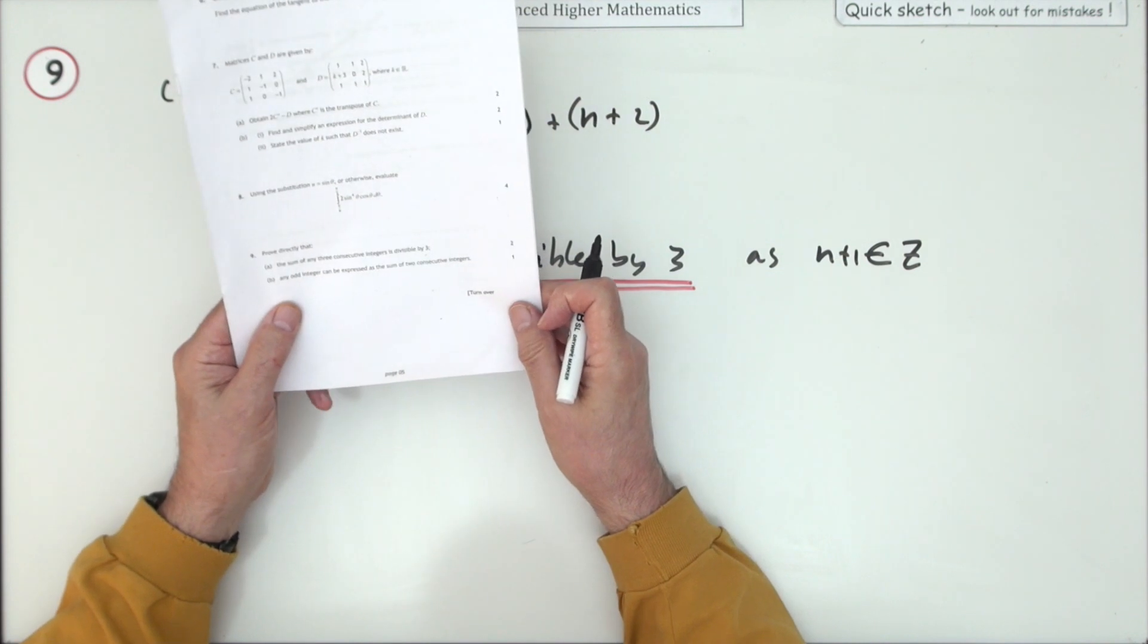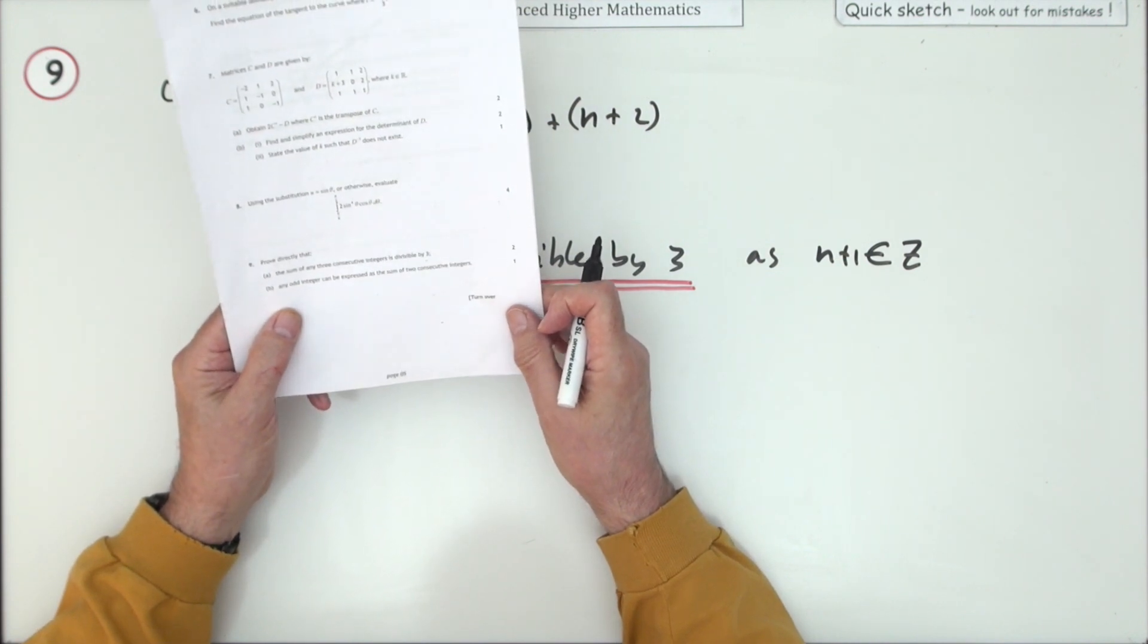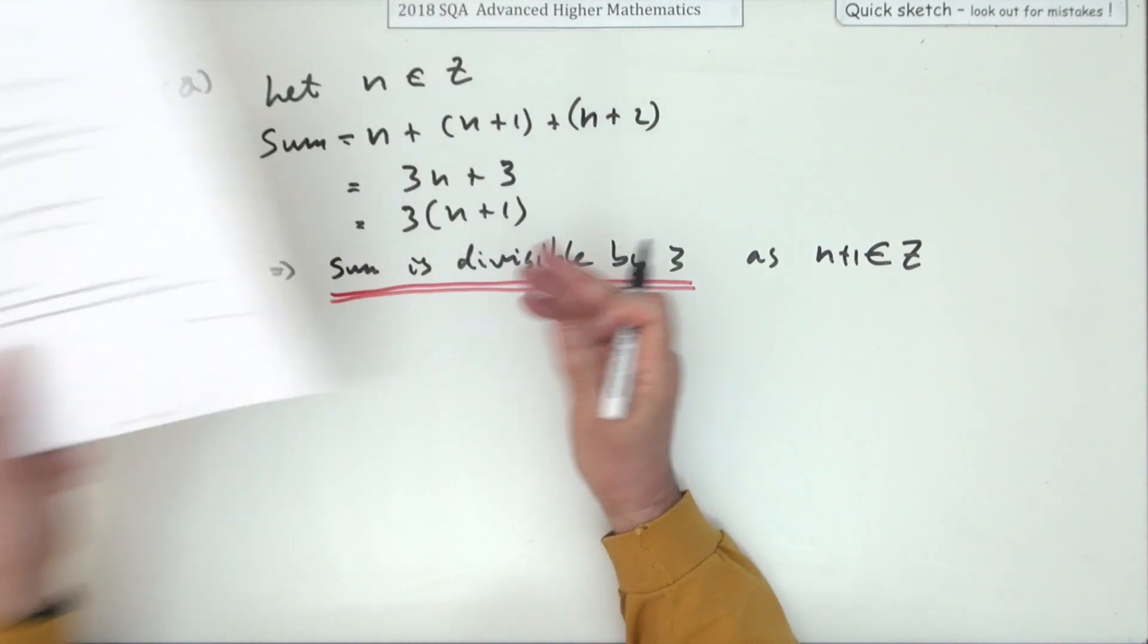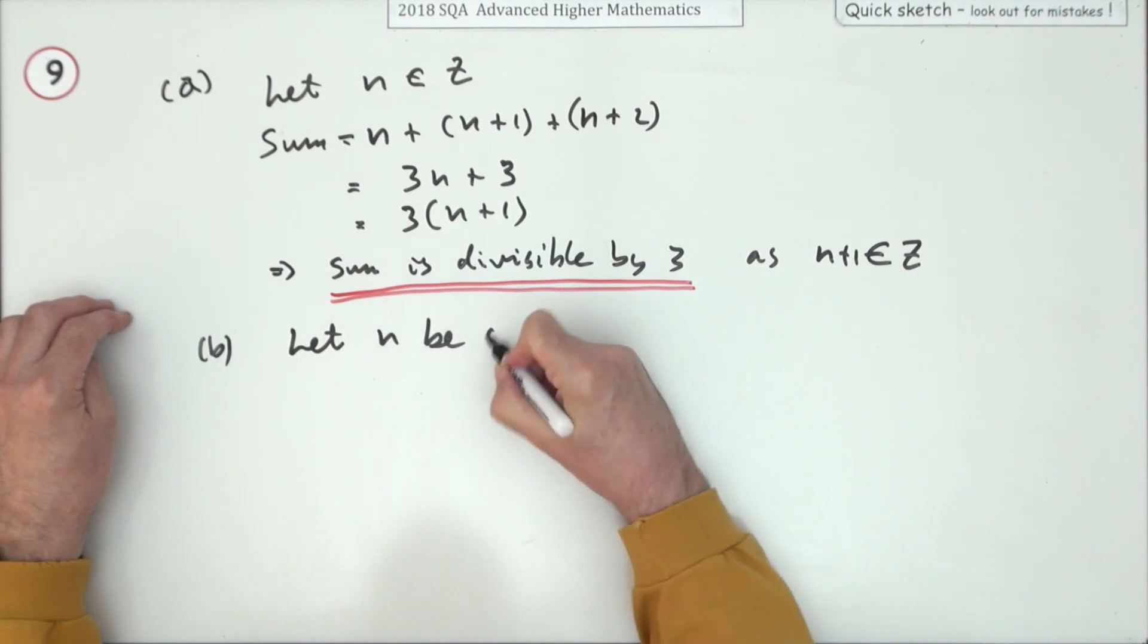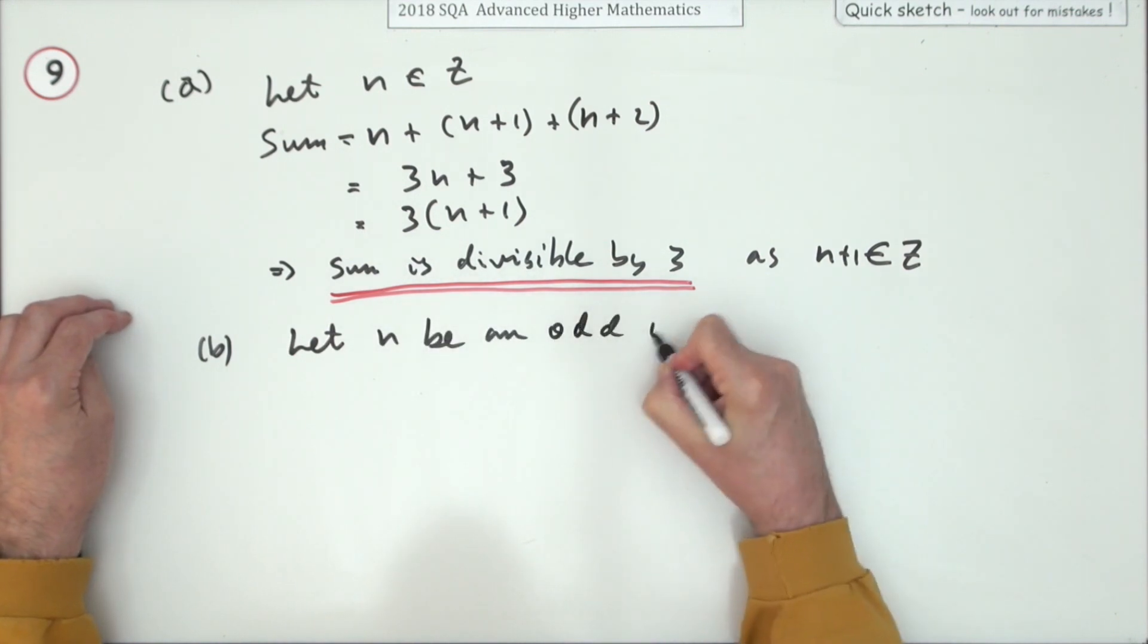Next bit: any odd integer can be expressed as a sum of two consecutive integers. Let n be an odd integer.